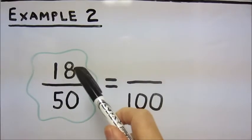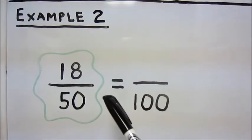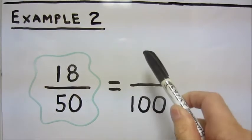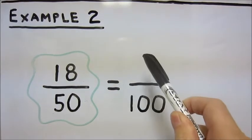So now we have 18 over 50 equals what over 100, or x over 100? To get our new numerator,